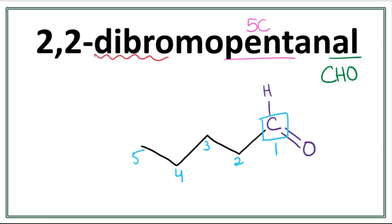Now this dibromo here means that there are two bromines attached to this aldehyde. Both of them are attached on the second carbon right here. Let's get rid of these numbers here and let's attach the bromines on the second carbon.